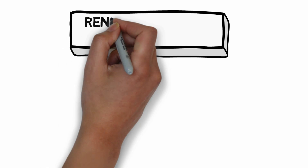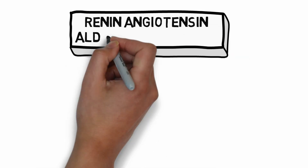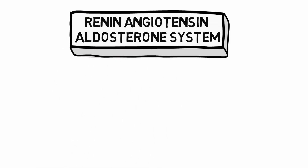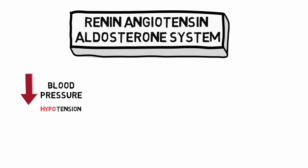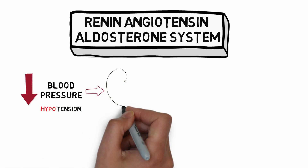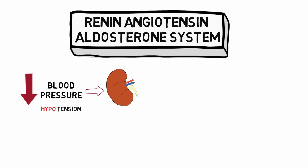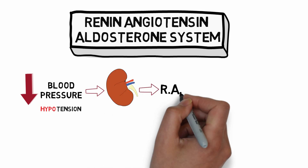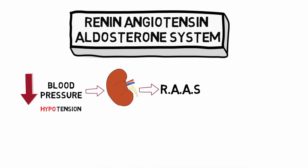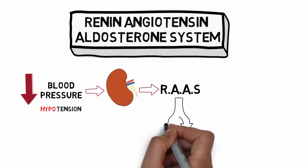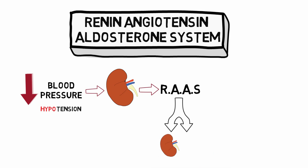In this video we will discuss the renin angiotensin aldosterone system. Before getting into all the complex stuff, let's have an overview of this system. Whenever your blood pressure falls, known as hypotension, the kidneys are able to sense it and they activate the renin angiotensin aldosterone system, which acts on the kidney as well as the blood vessels to restore the blood pressure to normal.